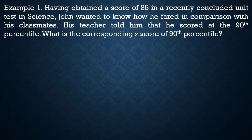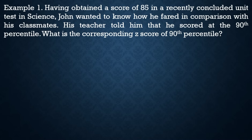For example, John obtained a score of 85 in a recently concluded unit test in science. His teacher told him he scored at the 90th percentile. What is the corresponding z-score? Remember, when locating the 90th percentile, we find the area before or below that point — we look for the area below the percentile in the z-table.